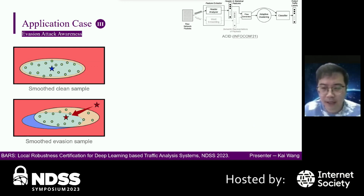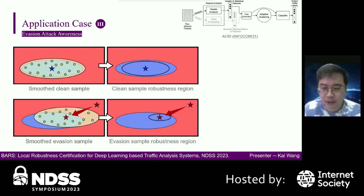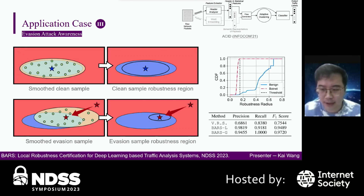The third application case of BARS is evasion attack awareness. The supervised multi-classification system ACID always operates in an adversarial environment. Attackers can add slight perturbations to malicious samples and make ACID classify them into the benign class. Because the data distributions of clean samples are different from those of evasion samples, using the smoothing noise of the BARS class, the robustness radii of evasion samples are much smaller than those of clean samples. We can set a threshold for robustness radii to distinguish evasion samples from clean samples.